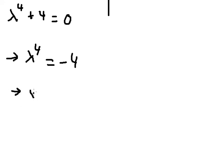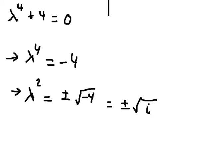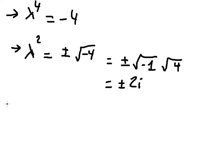To find the solutions, we first take the square root of both sides, giving lambda squared equals positive and negative the square root of negative four. We know that the square root of negative one is i, and the square root of four is two, so we can write lambda squared equals plus or minus 2i. Then we take another square root of both sides to get four solutions.